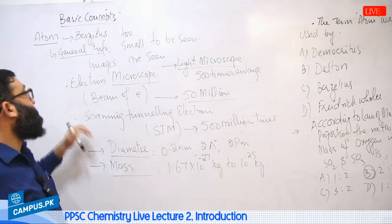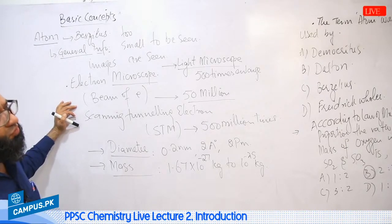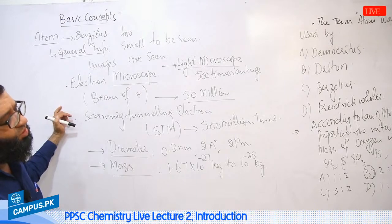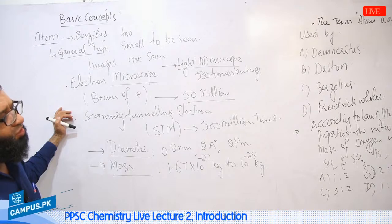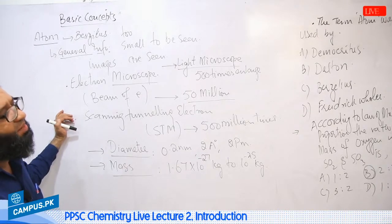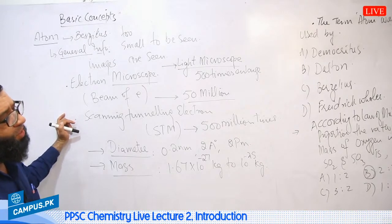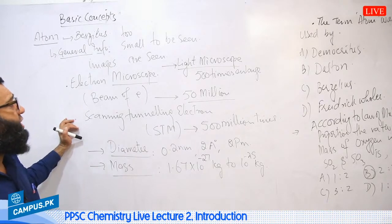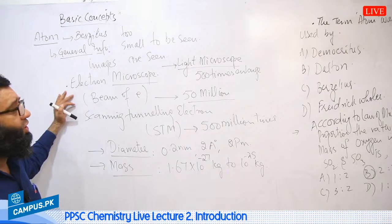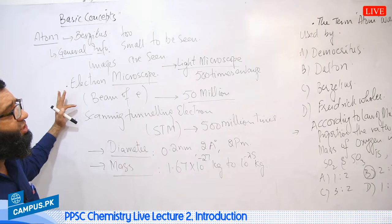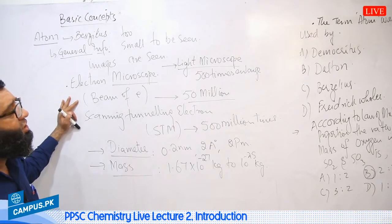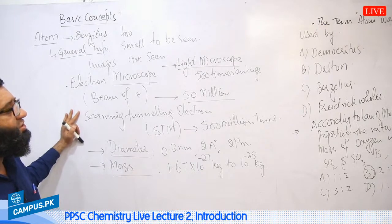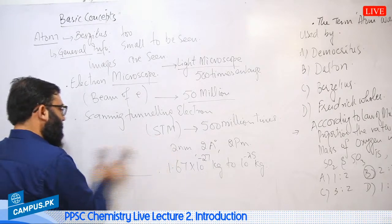To summarize the basic information about atoms: the word 'atom' was a Greek word used by Democritus, but the term was formally devised by Dalton. Later, Berzilius supported Dalton's atomic theory. Berzilius also discovered selenium and cerium and proposed the system of symbol formation for elements. Regarding microscopes: a normal light microscope gives 500 times magnification, an electron microscope gives 50 million times, and the STM gives 500 million times magnification.